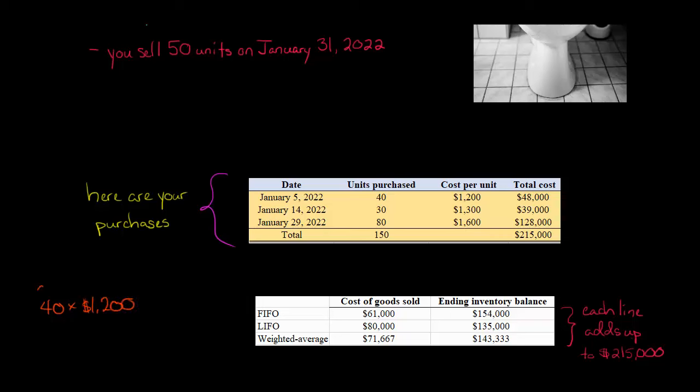But that's only 40 units, and we sold 50. So we've got to take 10 out of this set of purchases from January 14th. So plus 10 times $1,300 we paid per unit on that date. So we've got 40 units at $1,200 a unit, plus 10 units at $1,300 a unit. That comes out to a total of $61,000 for cost of goods sold if we used FIFO.